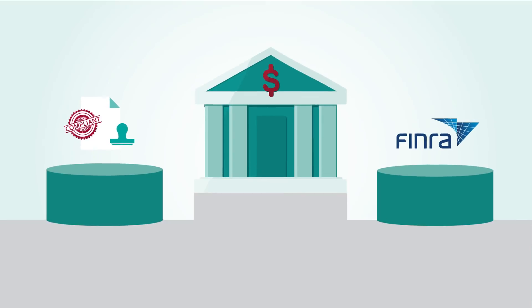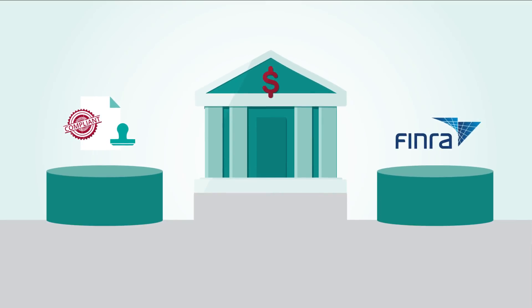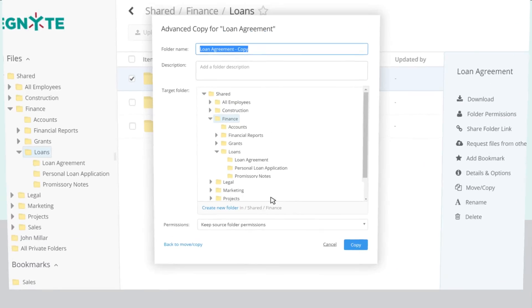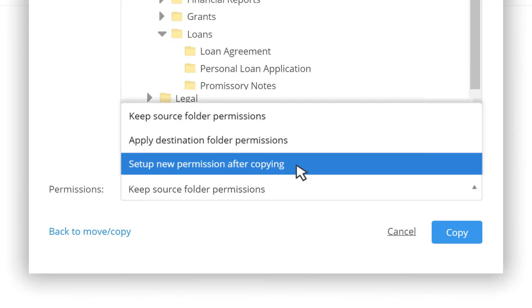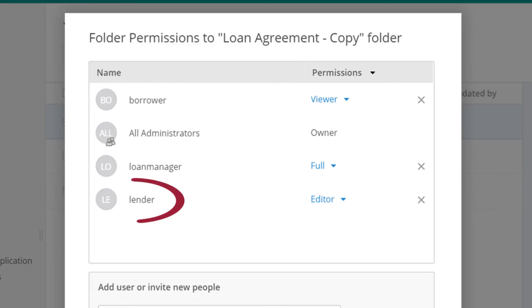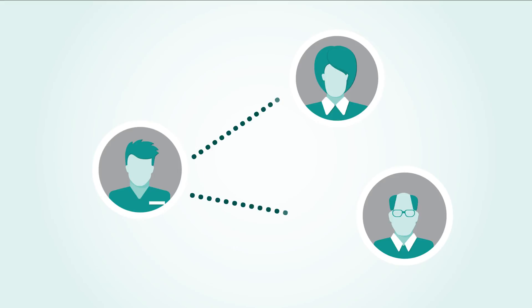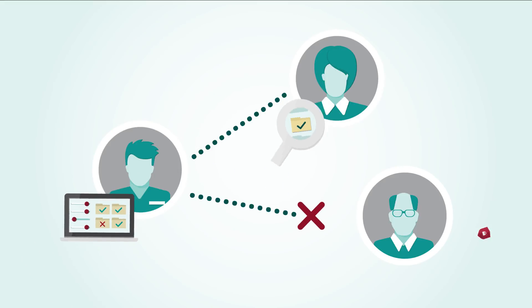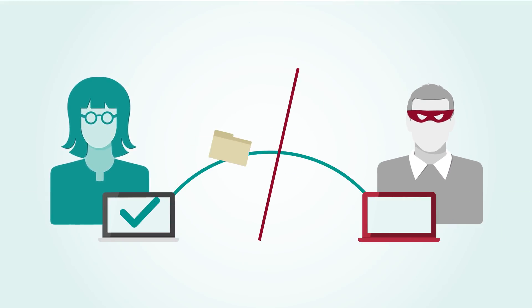Regulation and compliance are essential for financial institutions. For example, the loan process includes granular permissions that control the type of content that is accessed by borrowers, lenders, and loan processing managers. Folder templates create a secure, standardized workflow that streamlines the creation of permissions by preventing mistakes in the approval process or accidental sharing of private information.